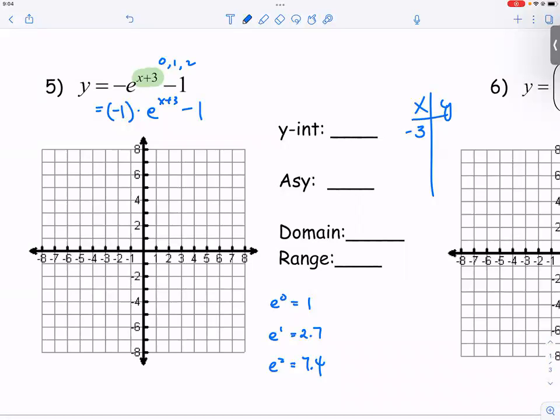So negative 3 for the x value. Again, negative 3 plus 3 is 0. E to the 0 is 1. 1 times the negative 1 is negative 1. And then negative 1 minus 1 is minus 2. So at negative 3 for x, your y value is negative 2.